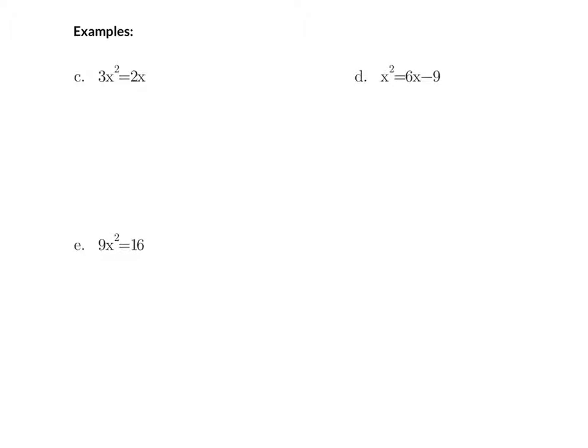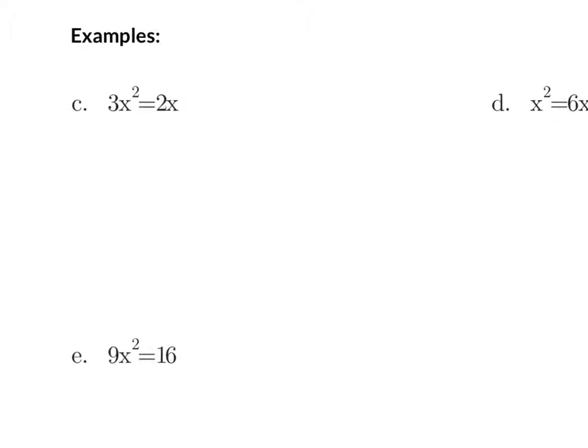Let's look at some other examples. Note that these examples do not have equals zero, and in order to solve using factoring, that has to be our first step — one side of the equation must equal zero. So the first thing we want to do is move all terms to one side. Starting with example C, I'm going to subtract 2x from both sides. It doesn't matter which terms you move, but I always like to make sure my x squared is positive.